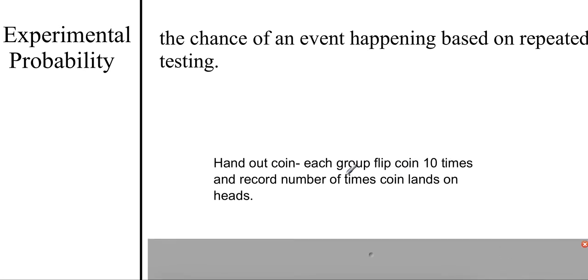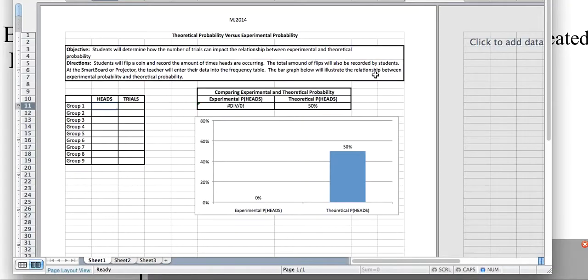What I did in class today is I gave every one of your classmates a coin, and they each flipped it 10 times. So I'm going to take a look at a graph. Different groups were flipping it 10 times and recording how many heads they got. So watch what happens here. Theoretically, flipping a head would be a 1 out of 2 chance, or 50%. So this part of the graph will never change.